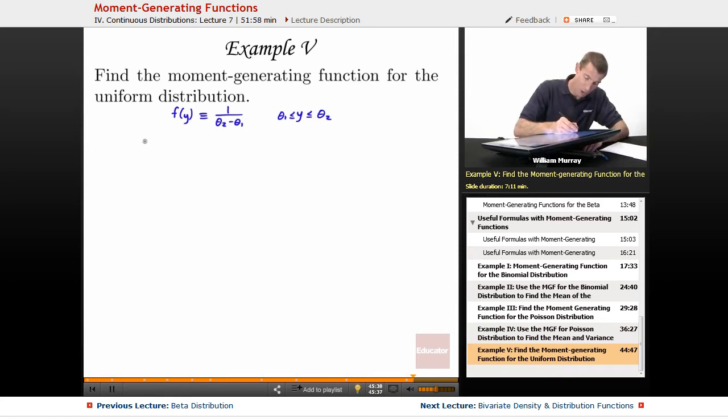Now let's find the moment generating function. By definition the moment generating function is, colon equals means defined to be, the expected value of e to the t times capital Y. Now the way you calculate the expected value of a function is, well with the discrete distributions we were studying before, it was a sum. For a continuous distribution it's an integral.